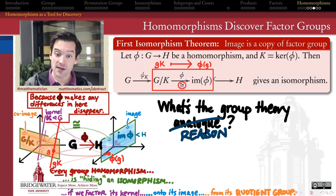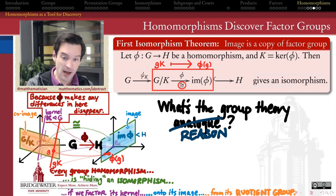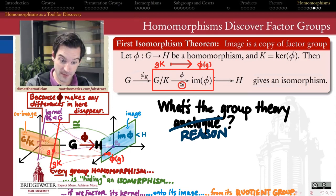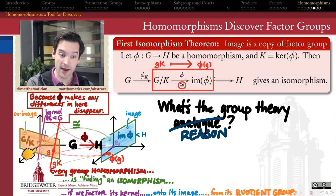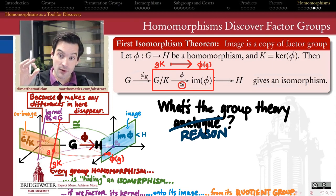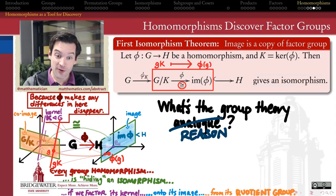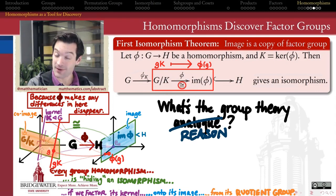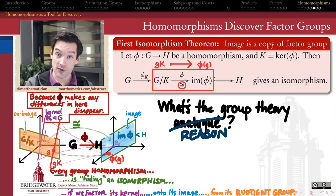The reason the first isomorphism theorem seems reasonable is that if I start with a homomorphism from G to H that's not necessarily an isomorphism, I can make it onto by restricting from H down to just the image of phi. Then I can repair the fact that it might not be one-to-one by reducing down to the cosets of G by the kernel. Once we wipe out the kernel, all the differences between elements matter in a way that creates a bijection that respects the structure between the factor group G mod K and the image of phi — that is the hidden isomorphism the first isomorphism theorem gives us.